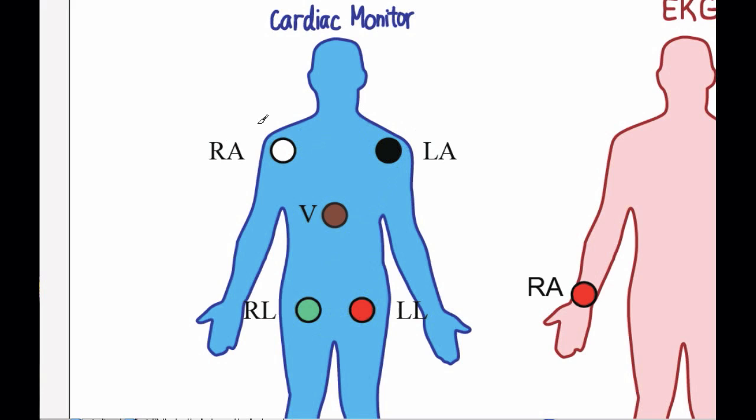The right arm one goes on the right shoulder. The left arm goes on the left shoulder. The brown one goes on the chest and acts as a ground. The right leg one goes at about the right groin. The left one on the left groin.